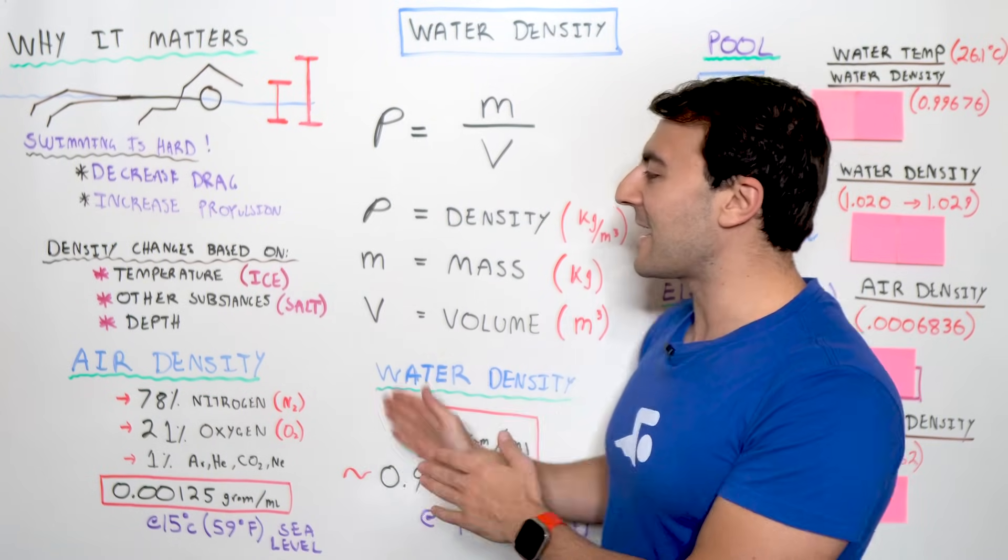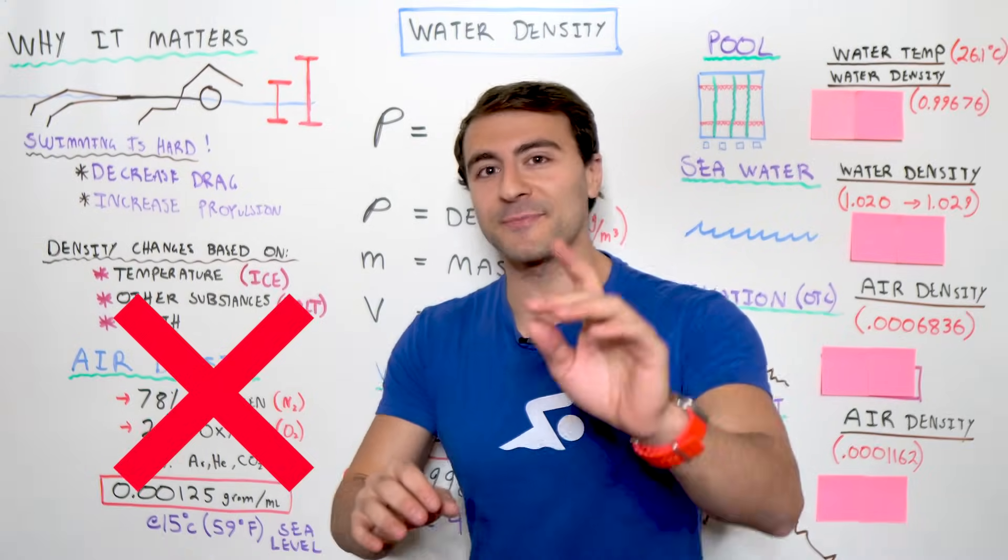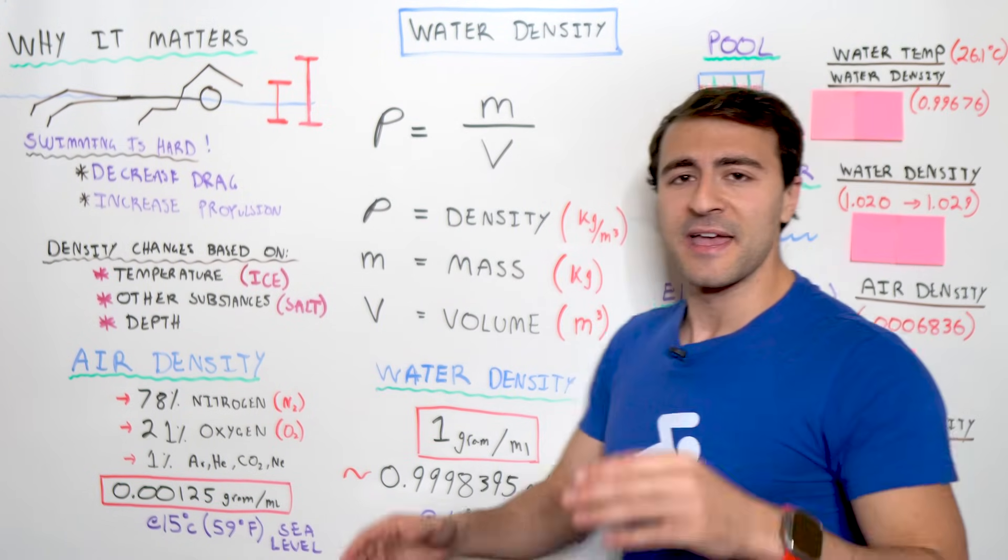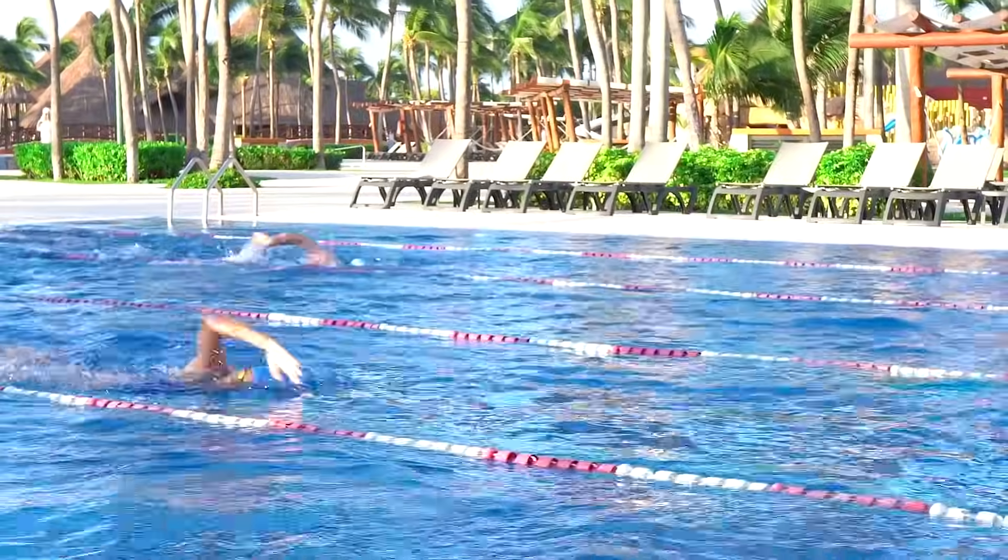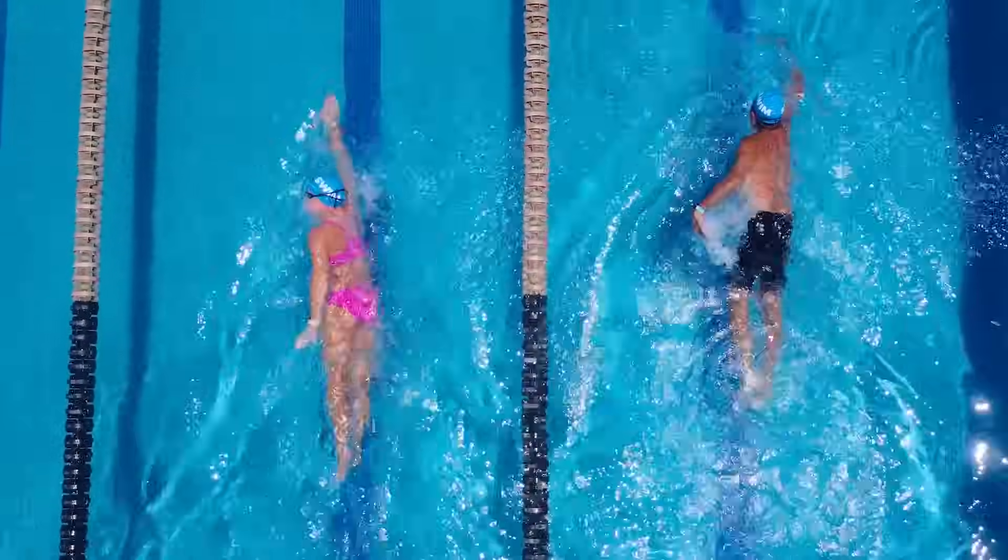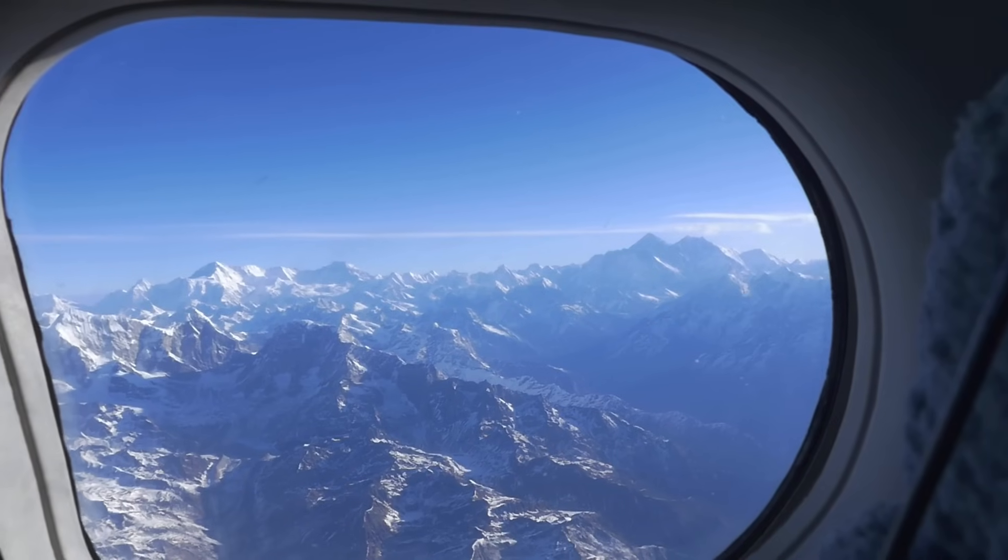So, yes, water is 800 times more dense than air. No, wrong, that is incorrect because remember, you can't swim in water that is 39 degrees. And what happens if we're swimming in salt water? What happens if we're swimming in a pool at sea level? How about a pool at elevation? And what if just for fun, we were to swim at the top of Mount Everest? Let's really break it down.